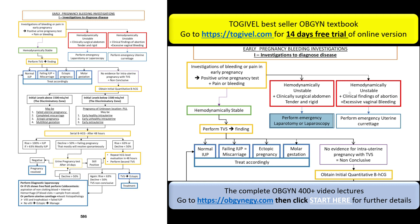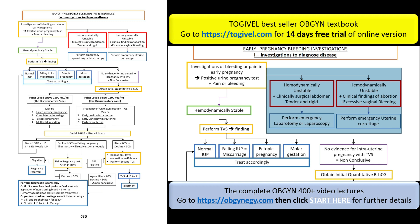If the patient is hemodynamically unstable but you do not have a surgical abdomen, and instead you have excessive vaginal bleeding with clinical findings of miscarriage or abortion, then the patient is unstable because of the vaginal bleeding. In this case you perform an emergency uterine curettage. Patients who come hemodynamically unstable — in hypovolemic shock — you have to stop the bleeding.